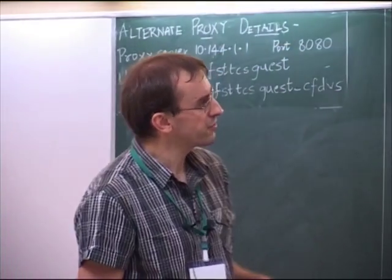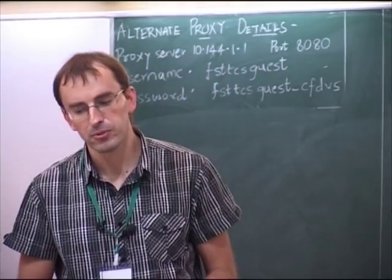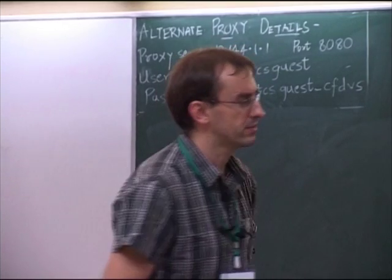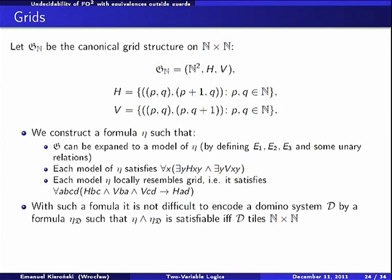The main problem is to write a formula which will encode grids simply, grids of n times n. Then having two variables is easy to encode these constraints. So the problem is to construct grids. And how we will do it? What we really need?